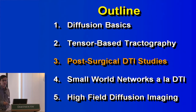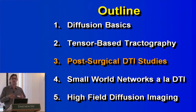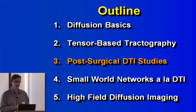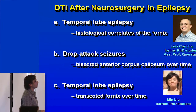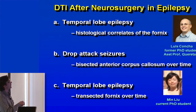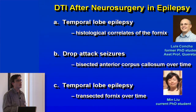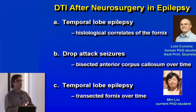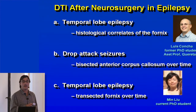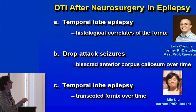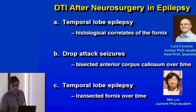For post-surgical DTI studies, I'd like to talk about using the parallel and perpendicular diffusion coefficients to get a better handle on what's happening with tissue microstructure. I'll quickly cover three different projects. We're looking at patients with epilepsy who then have neurosurgery — scanned before surgery and then after — to see what happens. We know when the transection is, what the injury is, where it is, and we can follow it longitudinally to see if diffusion parameters fit with what we saw in Victor Song's animal model. Topics: temporal lobe epilepsy, histological correlates with the fornix, drop attack seizures, and more temporal lobe epilepsy — work done by Luis Concha and Min Liu.